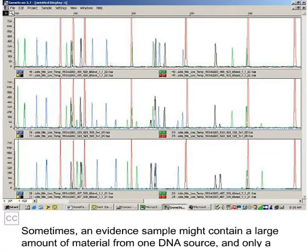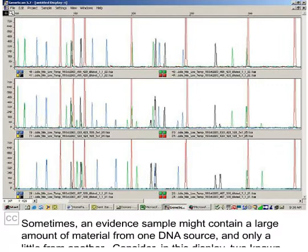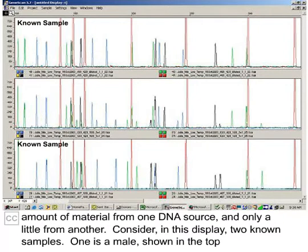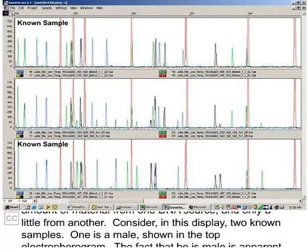Sometimes, an evidence sample might contain a large amount of material from one DNA source and only a little from another. Consider in this display two known samples.